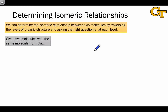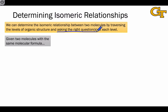I like to think of determining an isomeric relationship between two given molecules as riding the waves of the levels of organic structure. We start at the broadest level — connectivity — and drill down to the more subtle levels to determine the exact isomeric relationship between two given molecules. The key is to ask the right questions as we consider each level of organic structure.